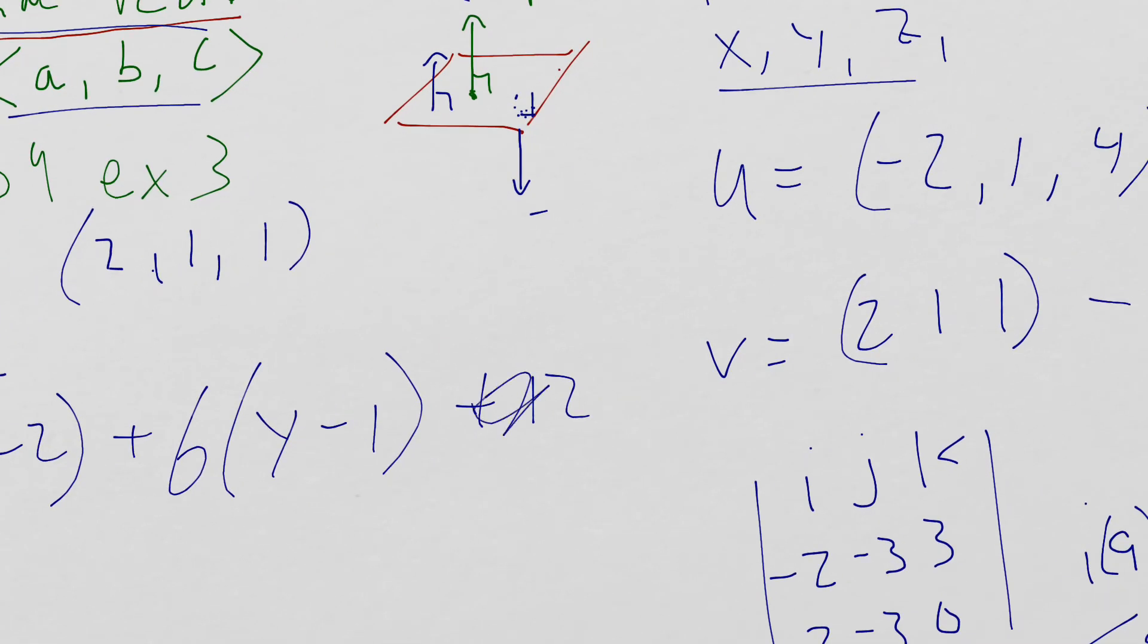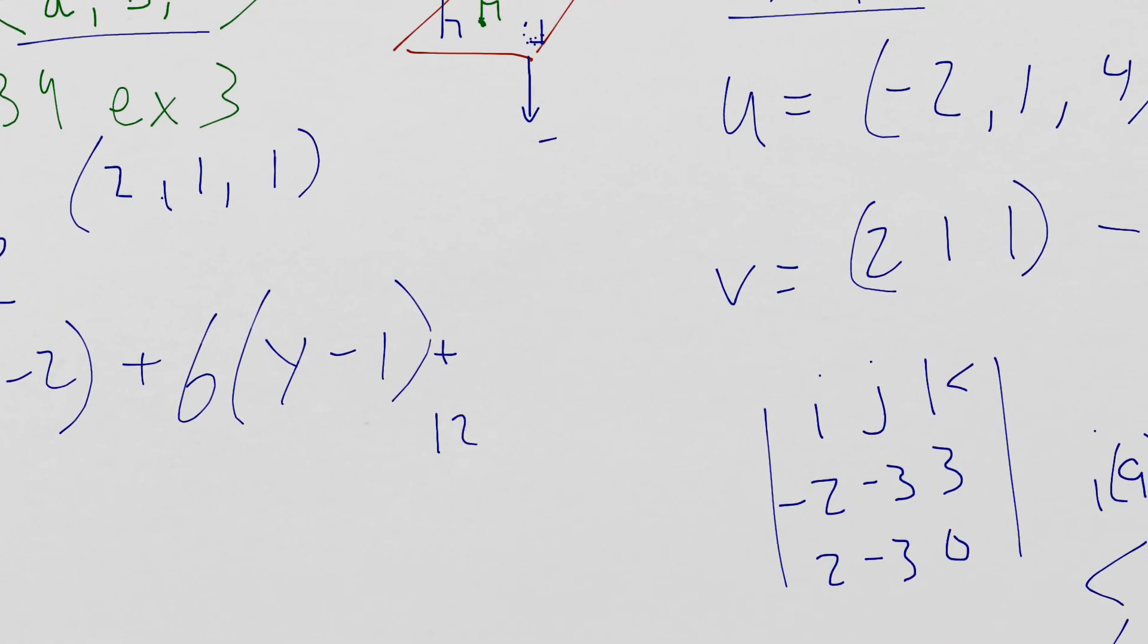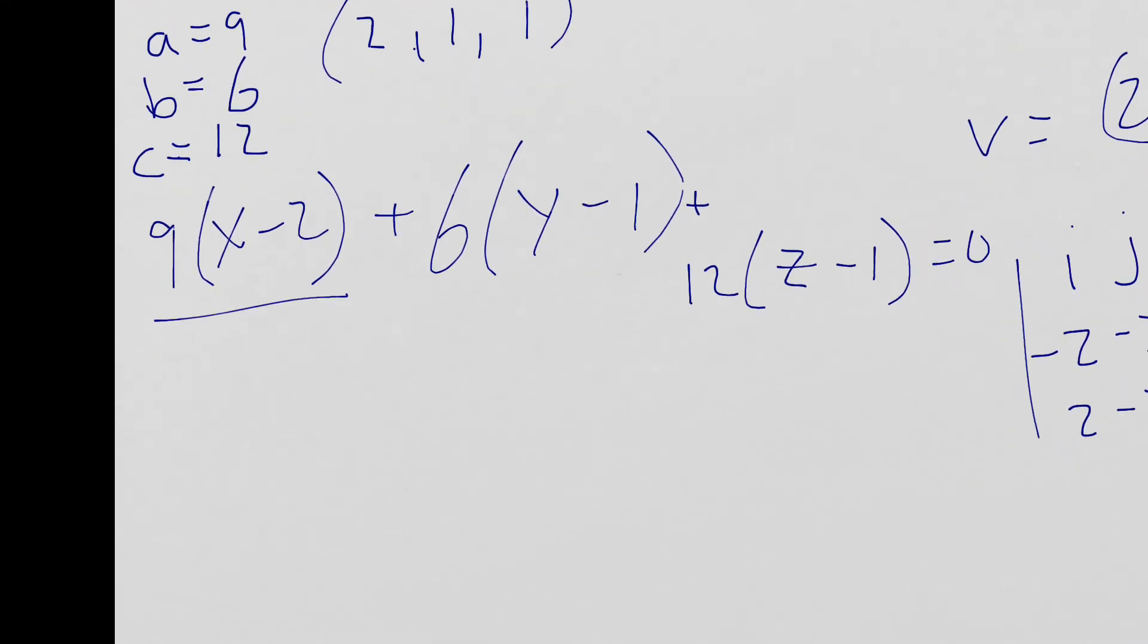Plus 6 times Y minus 1 plus 12 times Z minus 1. I put this in a different spot. Whoops. 12 times Z minus 1. All of this equals 0. So your last step is to multiply all of this out and then get it equal to 0. So you get 9X. Actually, the book does one more step. We'll go ahead and do that too.